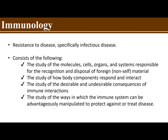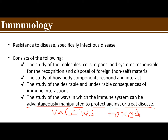Immunology also consists of the study of ways in which the immune system can be advantageously manipulated to protect against or treat disease. As medical technologists and future scientists, we would tend to manipulate the immune system. One way scientists have done this is by creating vaccines. Aside from vaccines, we also have toxoids — for example, the tetanus toxoid administered when you are injured by rusty metal, as discussed in your bacteriology with Clostridium tetanus.